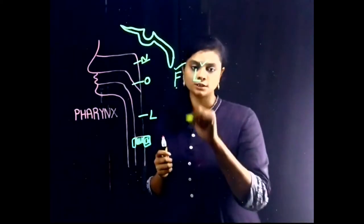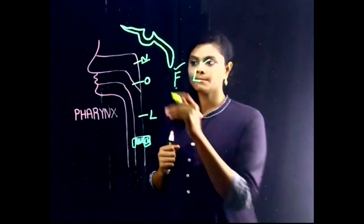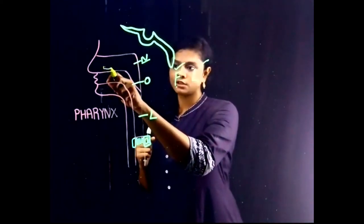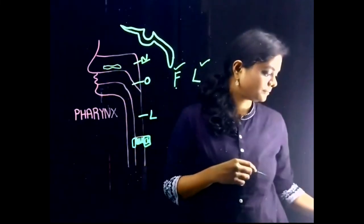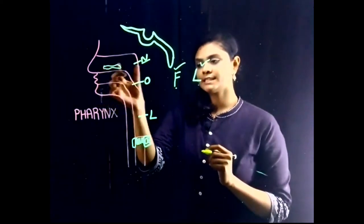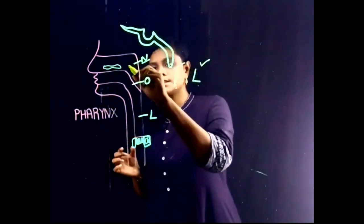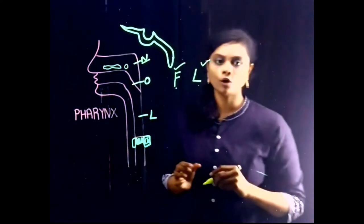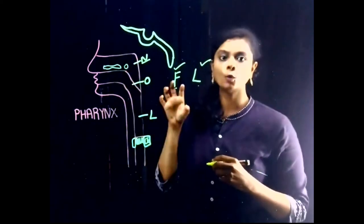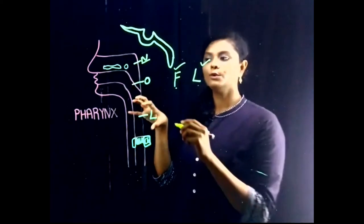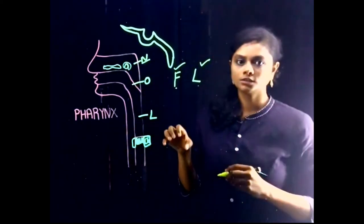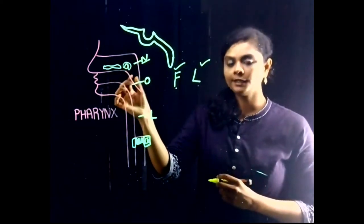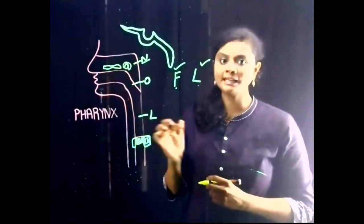Coming to the lateral wall — we know there is something known as the inferior nasal concha. Just 1.2 centimeters behind the inferior nasal concha there is the pharyngeal opening of the auditory tube. The pharyngeal opening of the auditory tube is bounded by a tubal elevation.